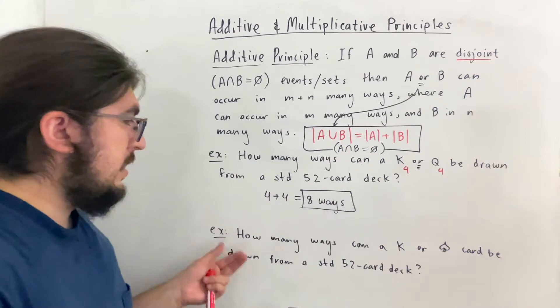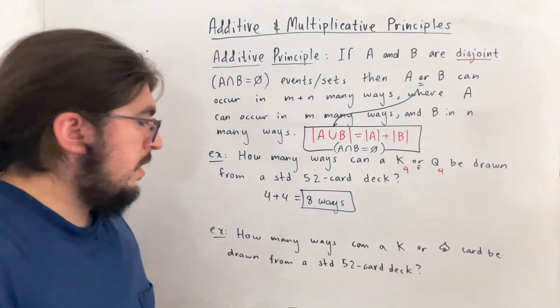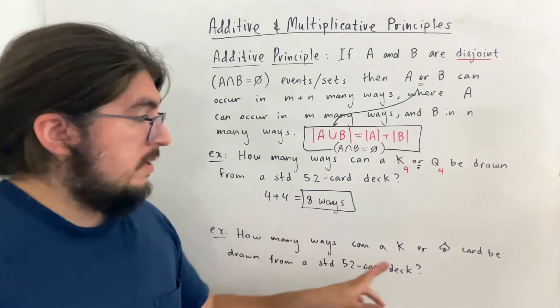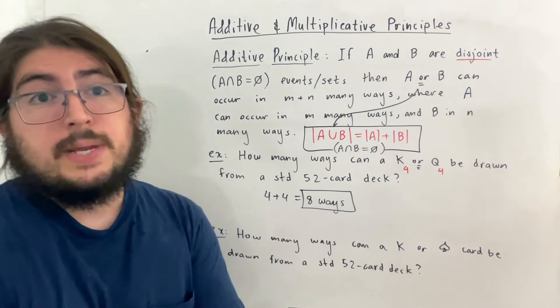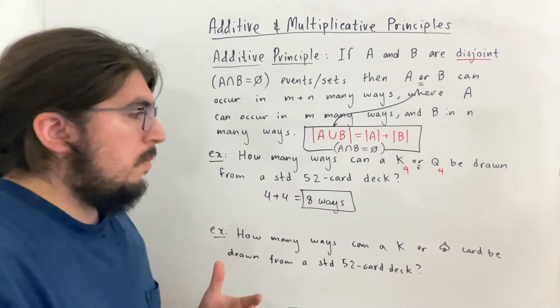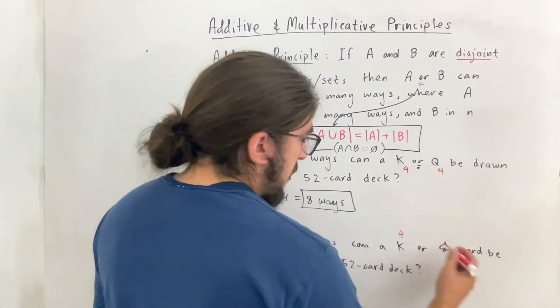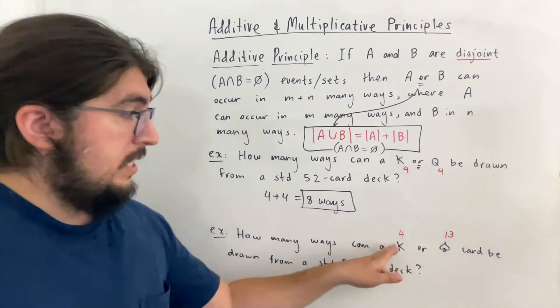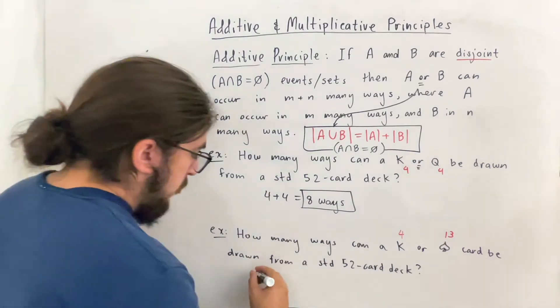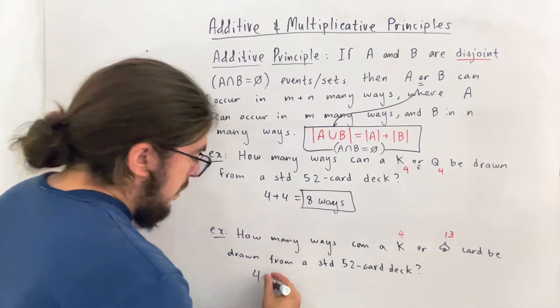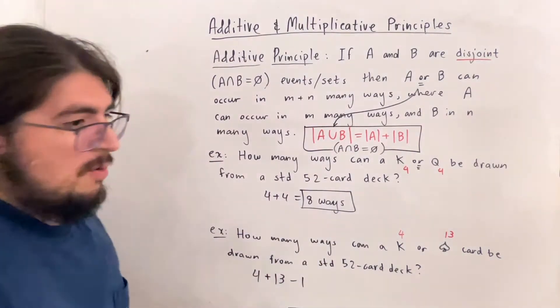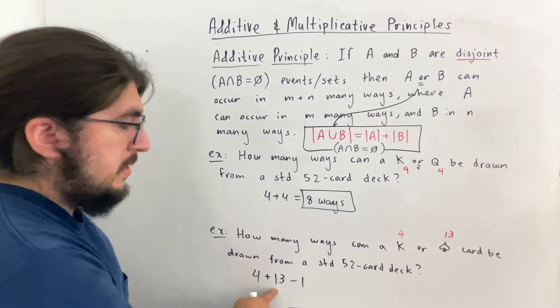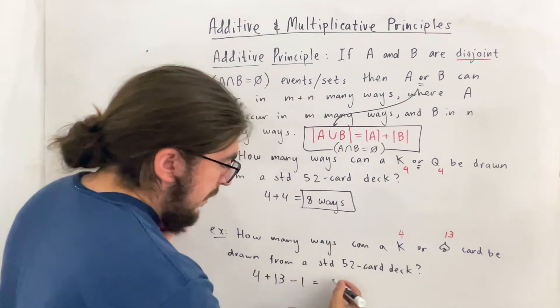And now what about this one? This is a little different. This says, how many ways can a king or a spades card be drawn from a standard 52 card deck? So this is different because if you look at all the kings and all the spades, there's actually a card that they share in common. There is a card that is a king and a spade at the same time, and that namely is the king of spades. So really what we'd be doing is if we counted all four kings and all 13 spades, we'd be counting the king of spades twice. So if you discount the king of spades, there'll be a total of this plus this minus one many ways. So there are four ways to draw a king, 13 spades to draw from, and then we're taking away that one king of spades that's counted twice. So discounting one of those gives us a total of 17 minus one, or 16 many ways total.